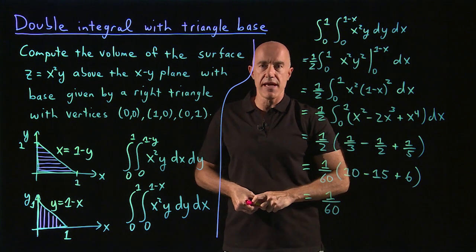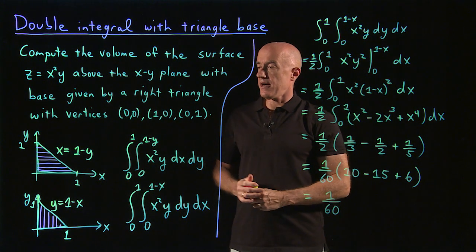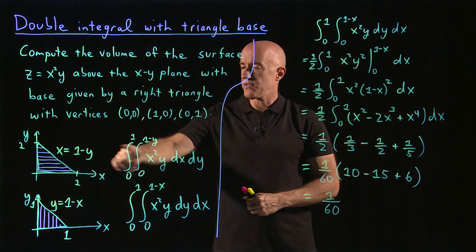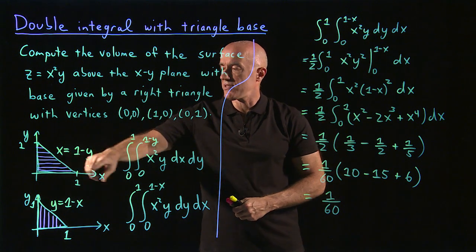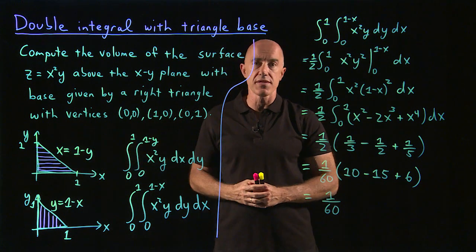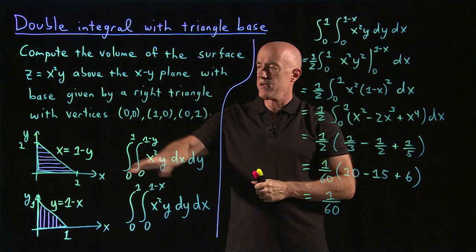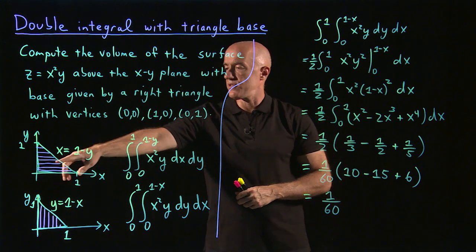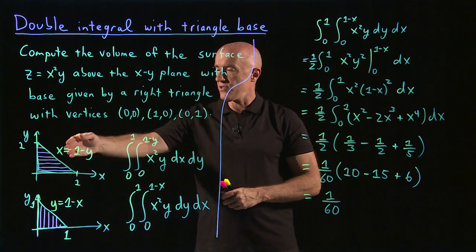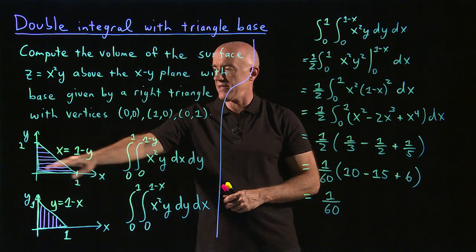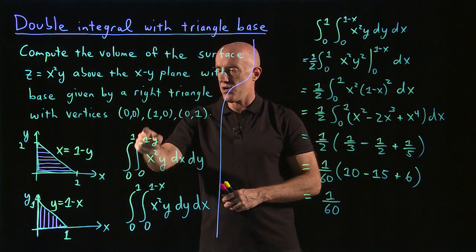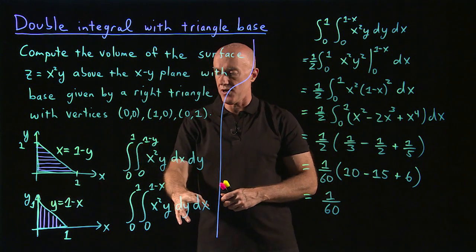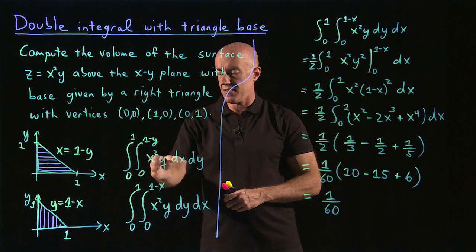So let me review the main point here. We have a base now to integrate over where we have to take into account that the limits are not pure numbers. When we integrated over a square, we were just integrating from 0 to 1 and 0 to 1. Now we need to integrate to this hypotenuse. We can do the integral in two different ways. The x integral first, and then the inner limit will depend on y. Or we can do the y integral first, and then the inner limit depends on x.